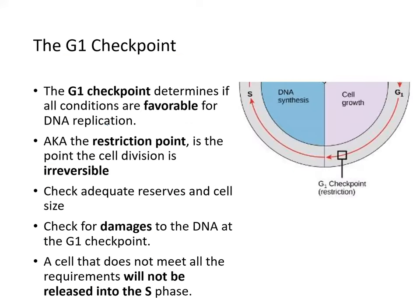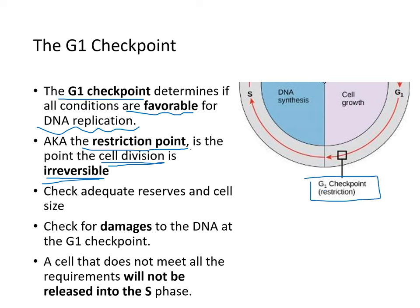The G1 checkpoint, also known as the restriction point, determines if all conditions are favorable for DNA replication. This is the point where cell division becomes irreversible — if you pass the G1 checkpoint, you proceed through synthesis, and then you must proceed through mitosis. It checks for adequate nutrient reserves, cell size, and DNA damage. Cells that do not meet these requirements are not released into the synthesis phase.